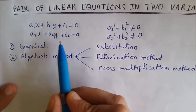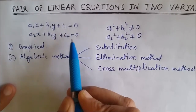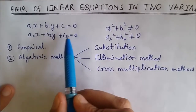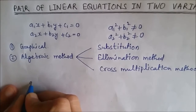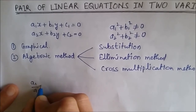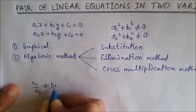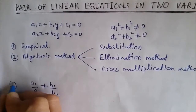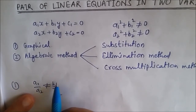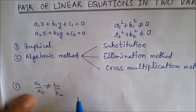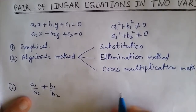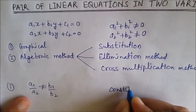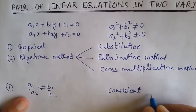The graphical representation of a linear equation in two variables is a straight line. When we have a pair of linear equations, following cases arise. Case one: when a1 upon a2 is not equal to b1 upon b2, the lines intersect at a point and this point gives us the unique solution of the two equations. In this case, the pair of equations is consistent and we have a unique solution.